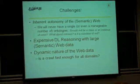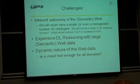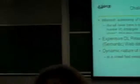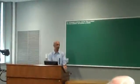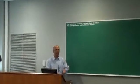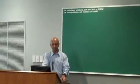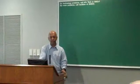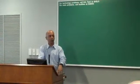DL stands for Description Logics. Description Logic reasoning — the kind that gives us implied facts — is very expensive, and it's very difficult for large Semantic Web data. So scalability is one of the issues we have to deal with, and the data is very dynamic.